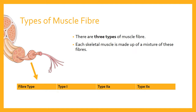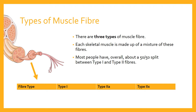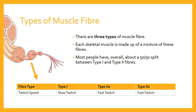We categorise them as follows: we have type one fibres and type two fibres. Within type two fibres, there are two different sorts — type two A fibres and type two X fibres. The key distinction is between what makes something a type one versus a type two fibre. Most people have overall about a 50-50 split between type one and type two fibres, which may vary a little according to genetics, and that combination may have an impact on what kinds of sports you're more predisposed to.